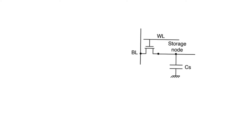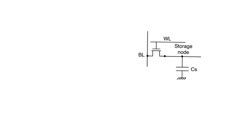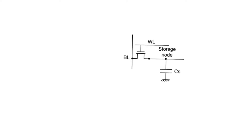DRAMs are probably the most complicated memory to read from and to maintain — probably even more complicated than flash memories, even with the need to continuously monitor threshold voltages in flash ROMs. The cell consists essentially of a single access transistor. Storage takes place at the storage node on the storage capacitor Cs. There is a single bit line and a single word line.